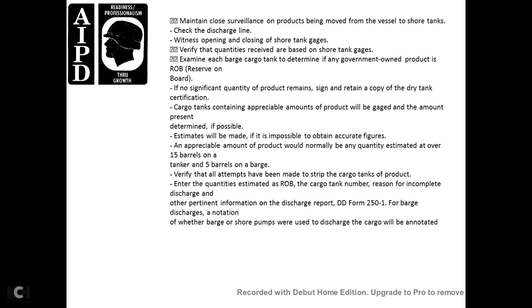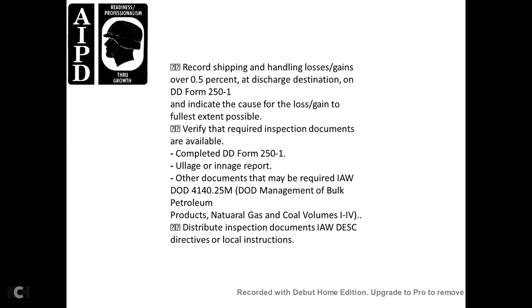The discharge report (DOD Form 251) should note whether barge or shore pumps were used for discharge. Record shipping and handling losses/gains over 0.5 percent. Verify required inspection documents are available and completed — including VA Form 251 and other documentation required per DOD 4140.25-M, Bulk Petroleum, Natural Gas, Coal Volumes 1–4, distributed per Defense Energy Supply Center directives and local instructions.